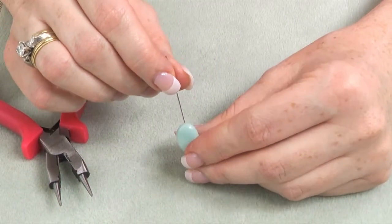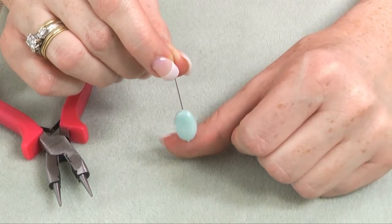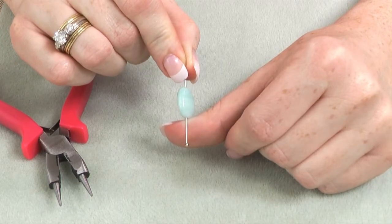How to create a simple loop. First, string a bead onto a head pin. Here we are using a ball tipped head pin.